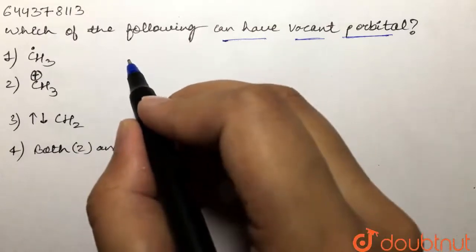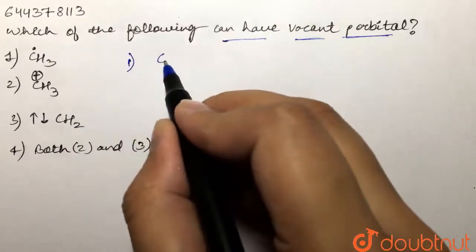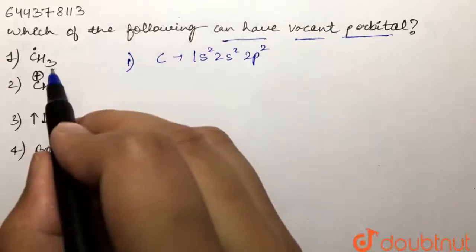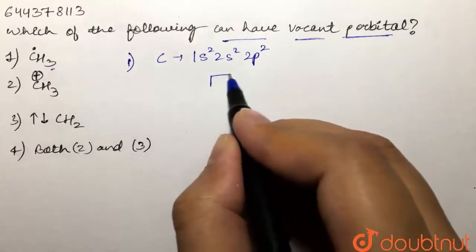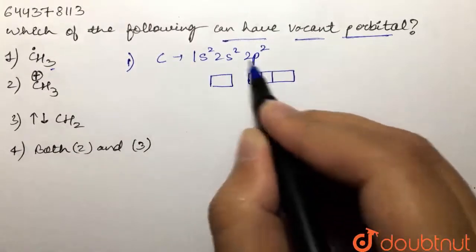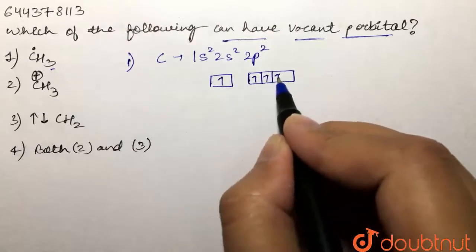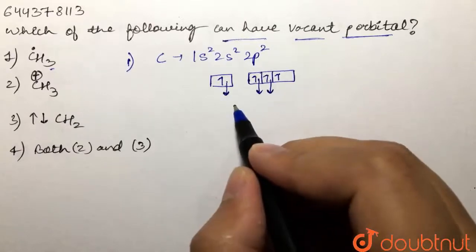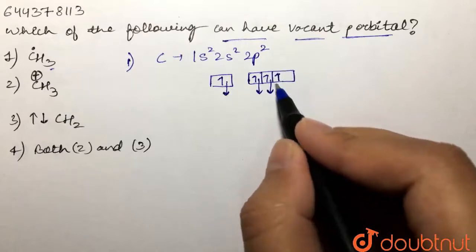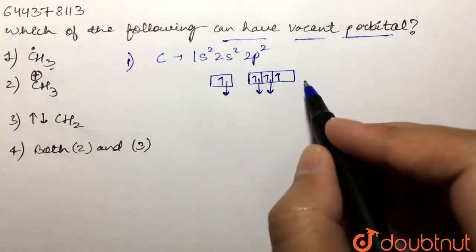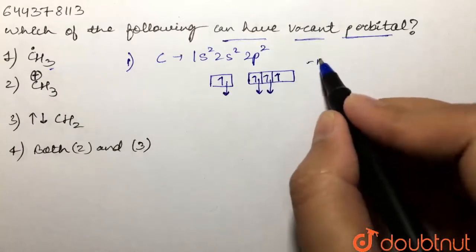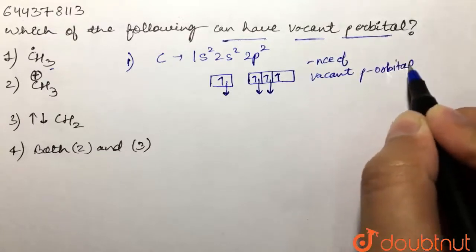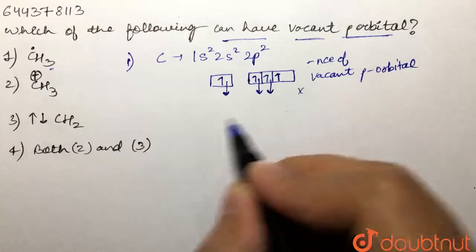If we take the first option, that is CH3 radical, carbon has electronic configuration 1s2 2s2 2p2. It is making three bonds, so in its excited state, one electron from the s orbital shifts to the p orbital. It makes three bonds with hydrogen, and one unpaired electron is present in one orbital. So there is absence of any vacant p orbital — this is not the correct option.